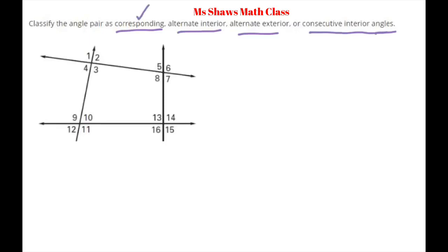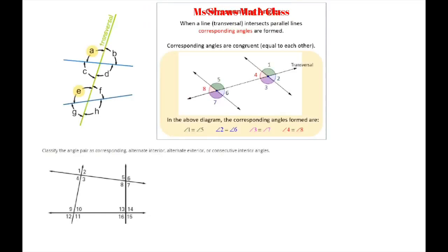The first one we're going to go over is corresponding angles. Basically, when you have a transversal that intersects two lines, the corners — like a and b — are called corresponding angles. So in this case, a and e are corresponding angles, b and f, c and g, and d and h. Those are corresponding angles. Now if they intersect parallel lines, then corresponding angles are congruent.